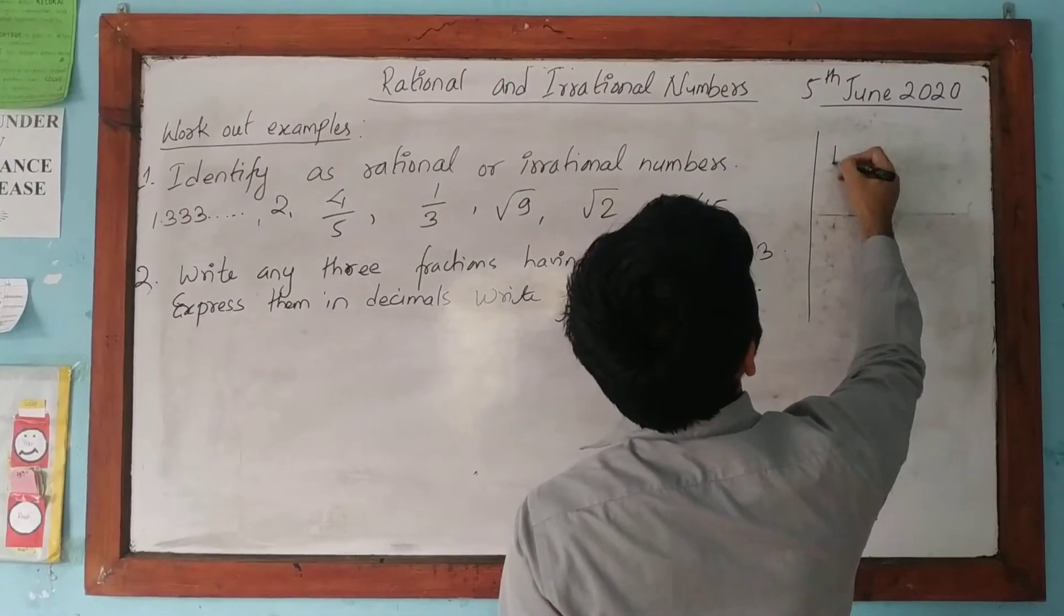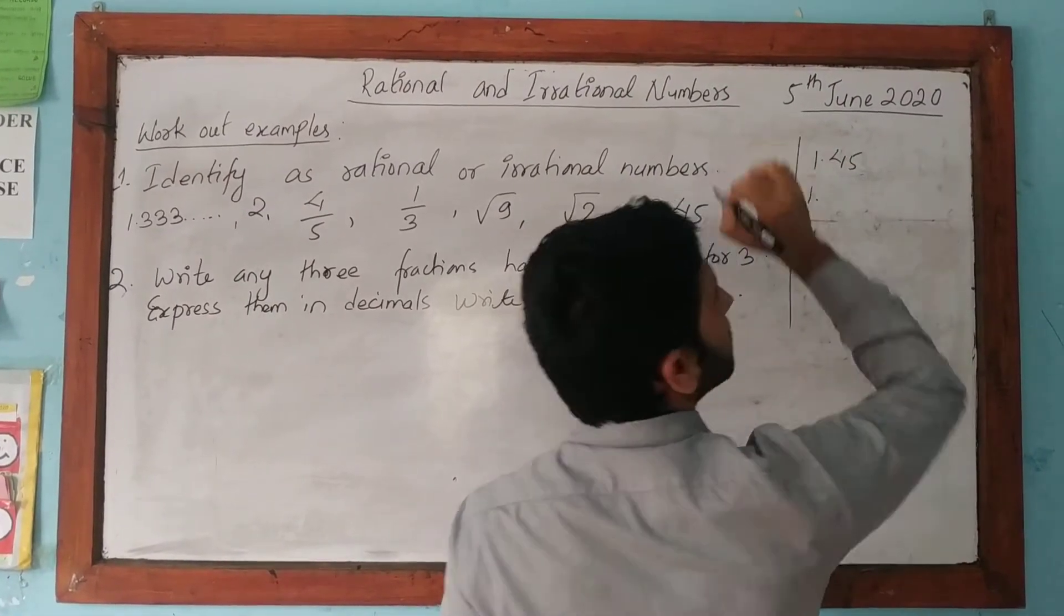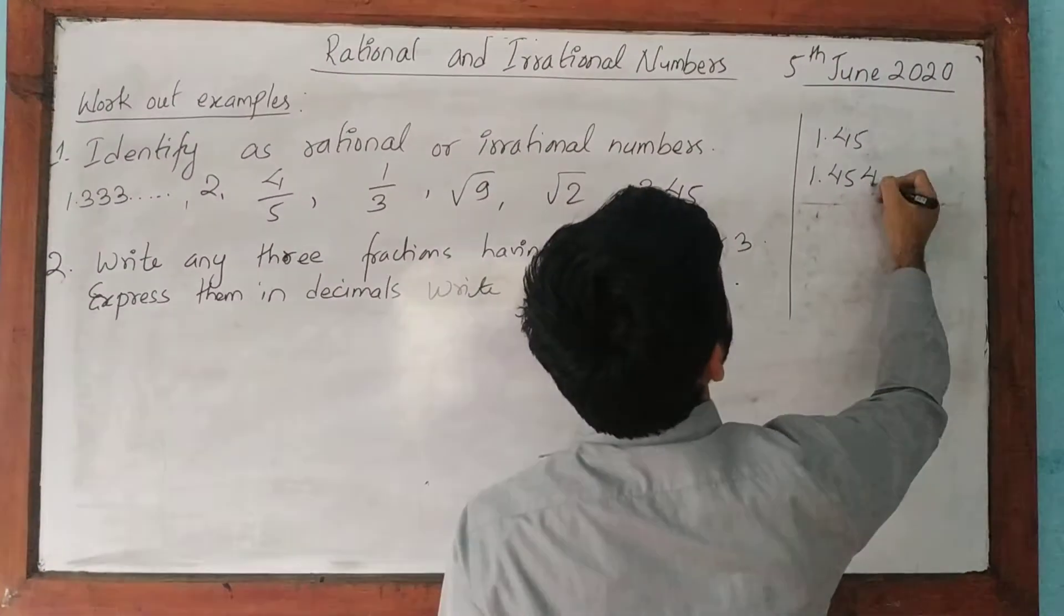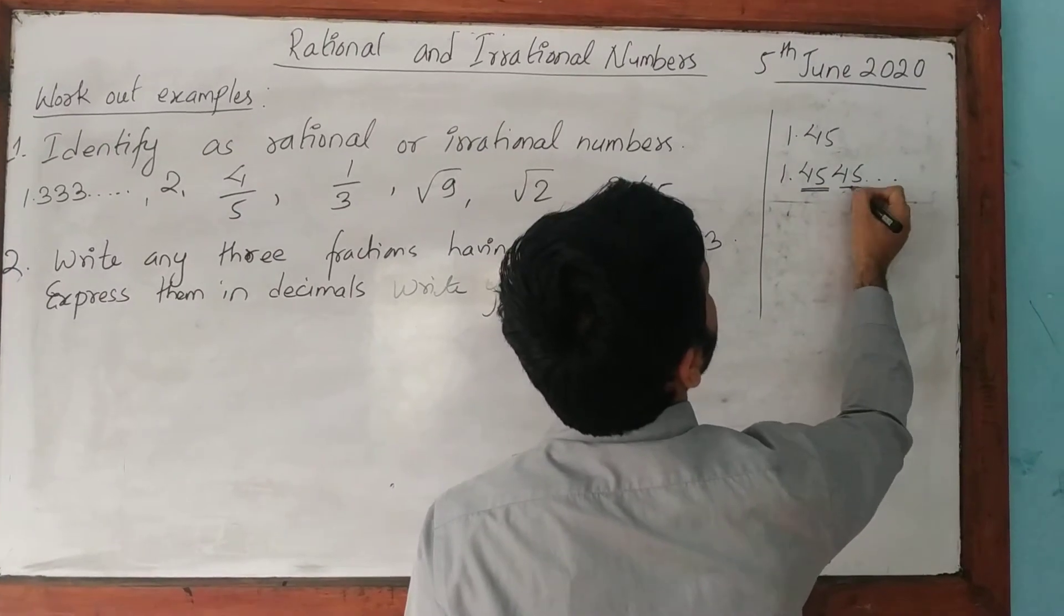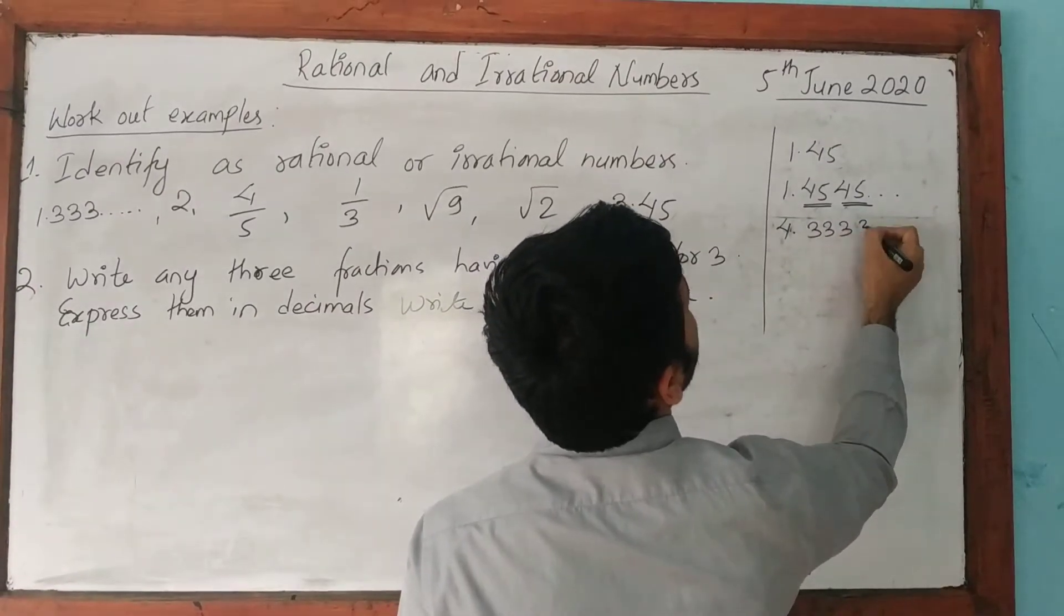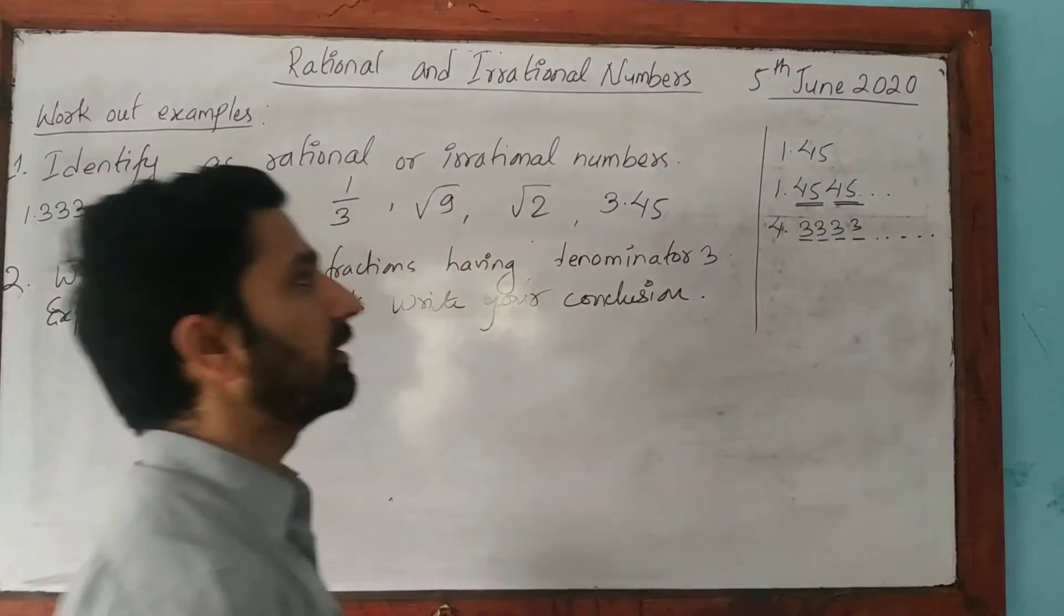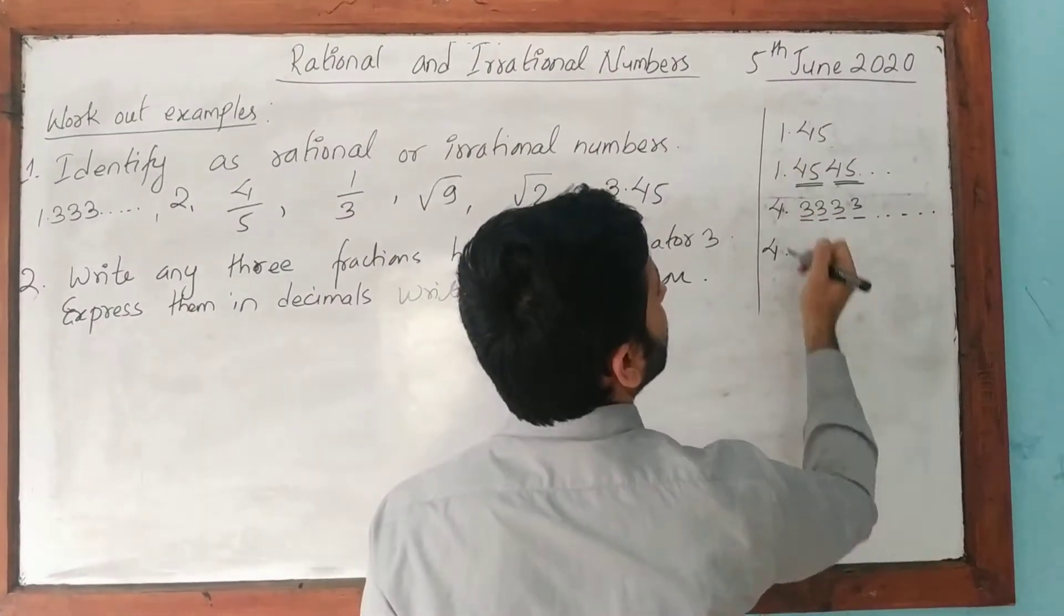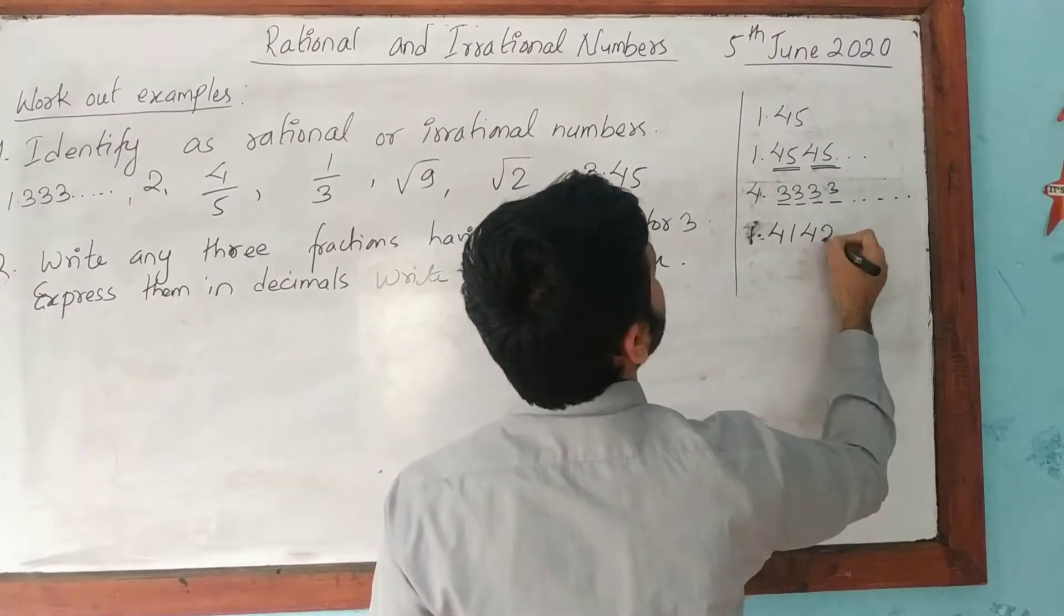Now let me repeat the fact again. The decimals that terminate: 1.45, this is terminating. Another one is the decimals that are non-terminating but recurring. Non-terminating, look here, I have taken two digits that are recurring. It may be 4.3333, look, the 3 is recurring. And the third decimal is non-terminating but non-recurring.